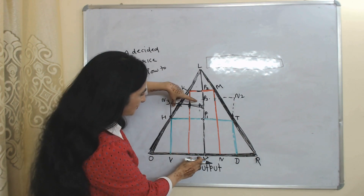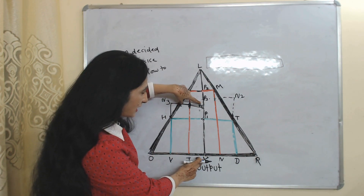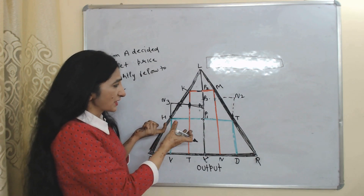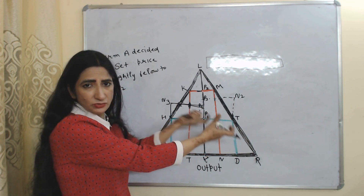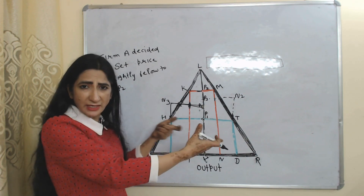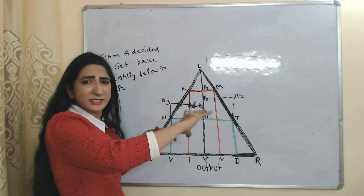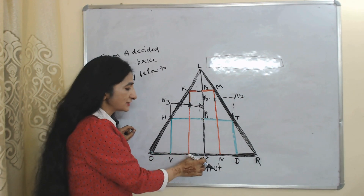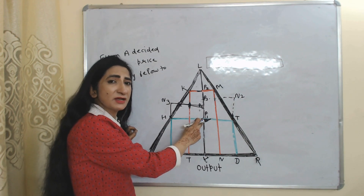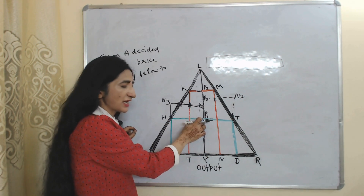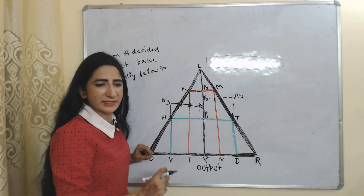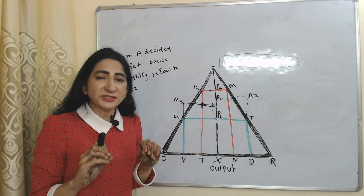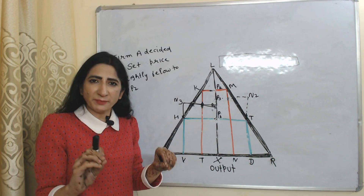Now A decided to set its product price slightly below xp4, assuming B will not change its price. When A reduces its price, this will give loss to B, and B will react again. Both firms are doing a price war, and this price war will continue until they reach xp1, which is called the minimum price. Firms cannot reduce price below xp1. However, xp1 is not a stable equilibrium price — in the Edgeworth model, there is no stable equilibrium price.